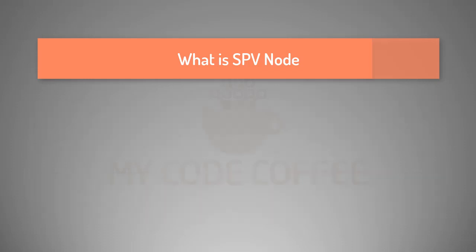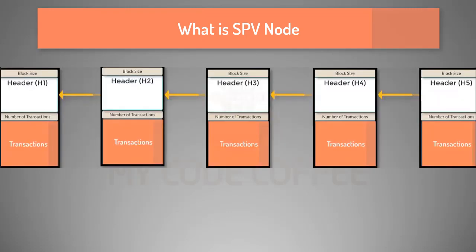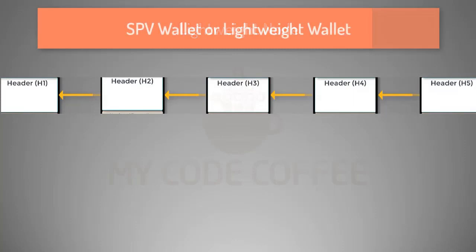So what is an SPV node? An SPV node is a lightweight node which does not maintain the full blockchain but instead maintains the header of the blocks. The header of a block is a thousand times lighter than a full block, and that is why it is called a lightweight node. SPV node is particularly popular as a wallet, and this type of wallet is called an SPV wallet or lightweight wallet.